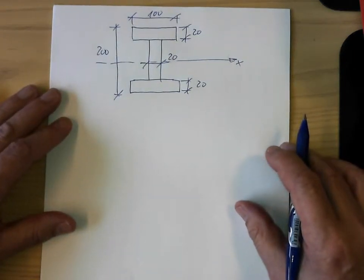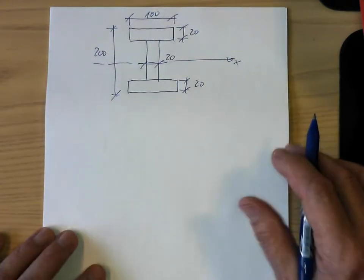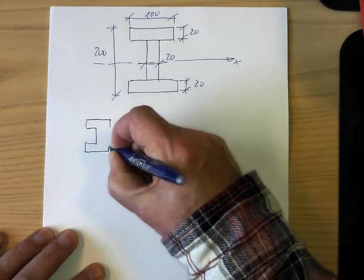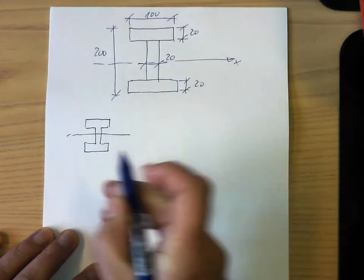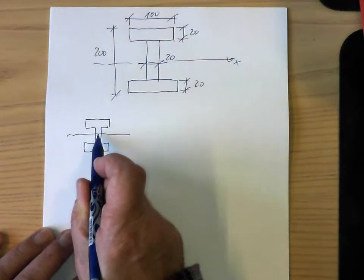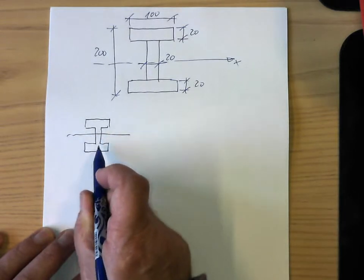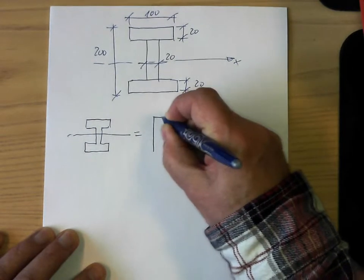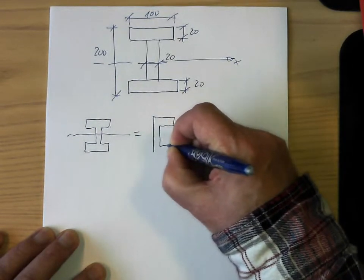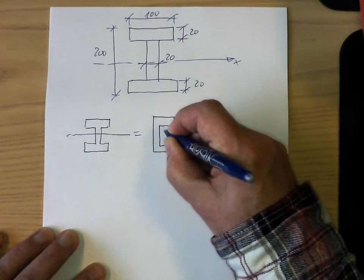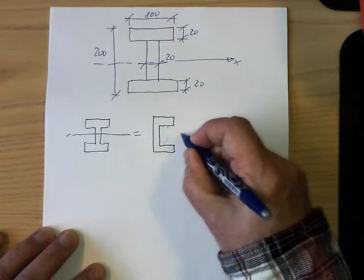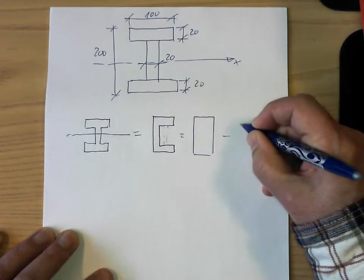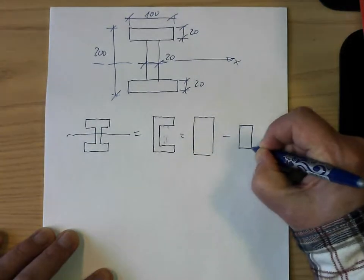I can use a special approach: if I have this profile and want to calculate the area moment of inertia about the horizontal axis, I can move the web element to the left or right side and it will not change the area moment of inertia. That means it's equivalent to taking this rearranged shape — which is the area moment of inertia of the outer object minus the inner object — and then I have only rectangular objects.